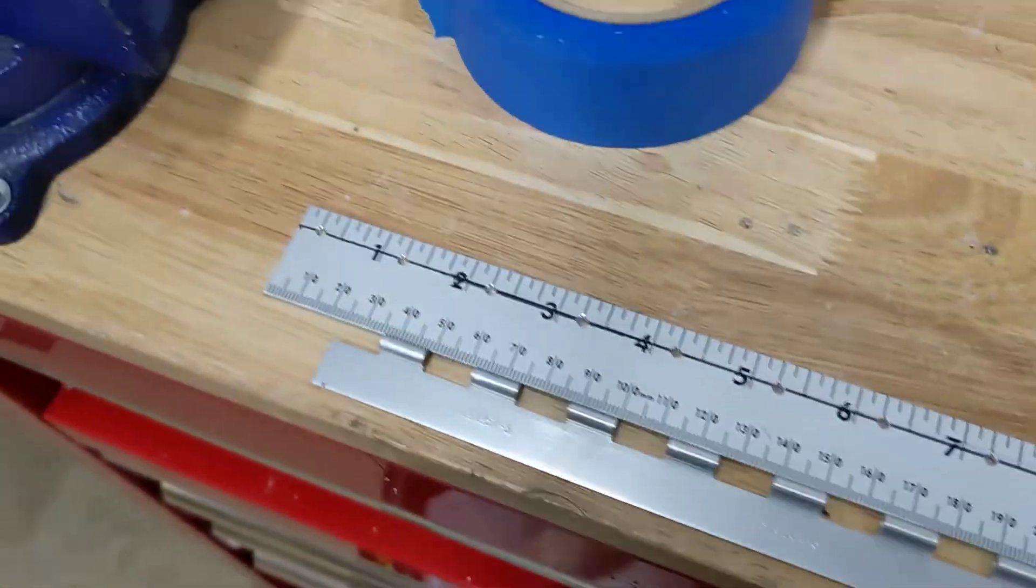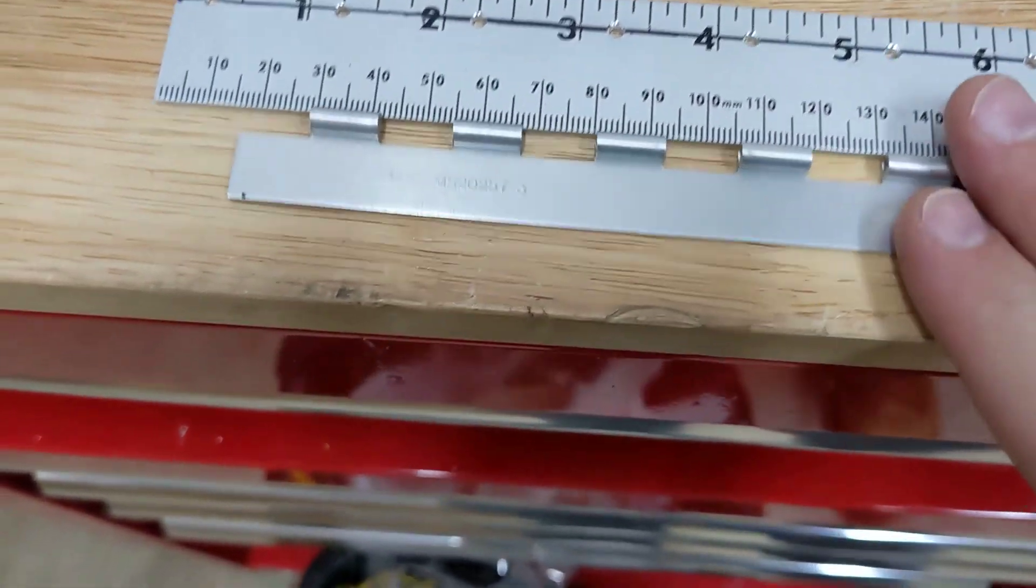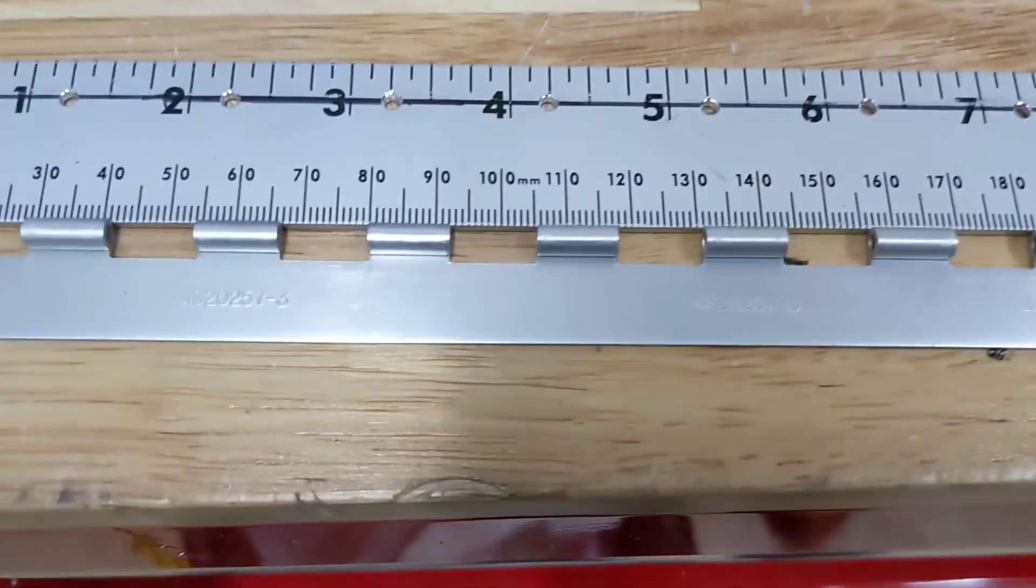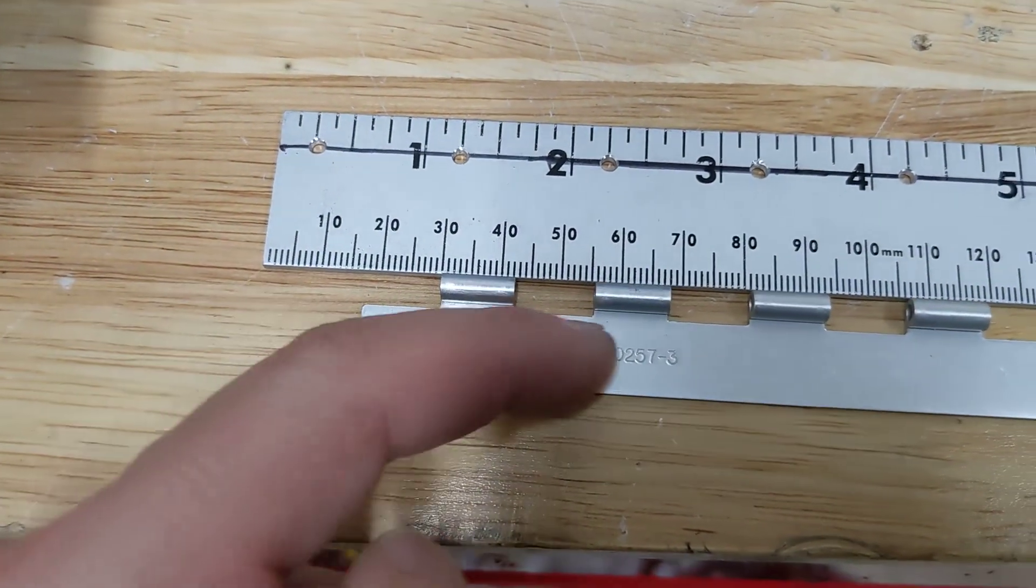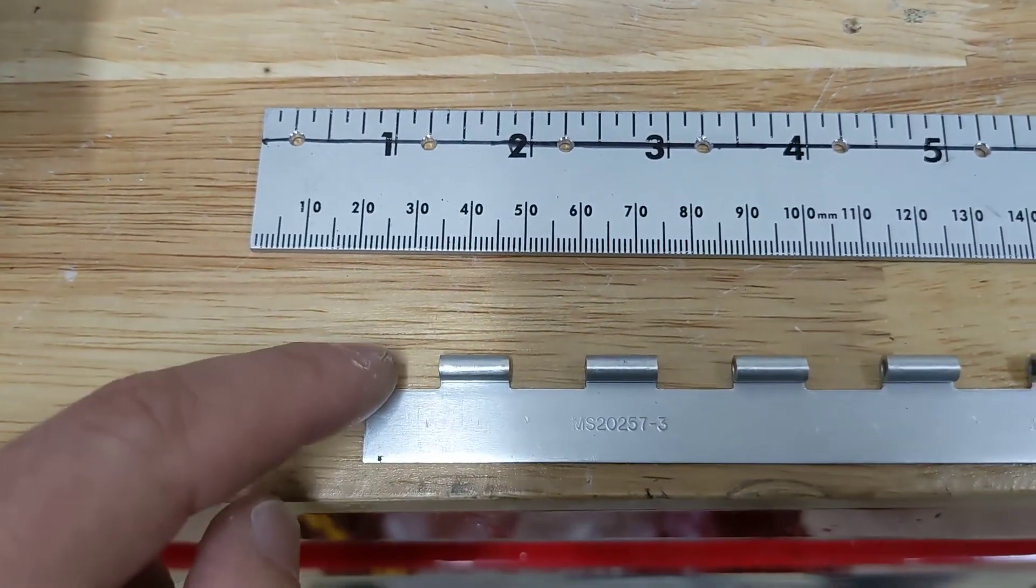The plans tell you that when you're drilling holes in these piano hinges, you should measure up a quarter inch from here to here, so basically right in the middle of this half inch piece of metal.